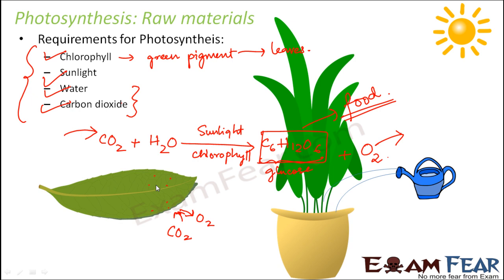Now do you understand why it is called photosynthesis? Because this process takes place only in the presence of sunlight. And why is chlorophyll needed? Because chlorophyll can only utilize the energy of sunlight and then cause this entire reaction to take place. So therefore sunlight, chlorophyll, water, and carbon dioxide — only if these four things are present, plants will be able to perform photosynthesis. This is how plants prepare their food and get energy.